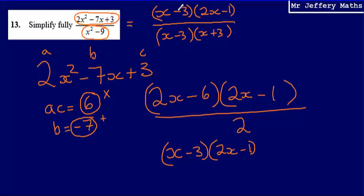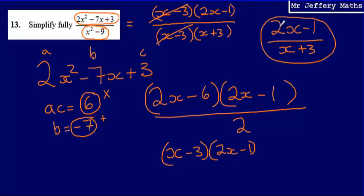So what I have now done is I've factorized the expression on top, I've factorized the expression on the bottom, and what I can see is that the x minus 3s will cancel. x minus 3 divided by x minus 3 leaves me with just a final answer of 2x minus 1 over x plus 3.